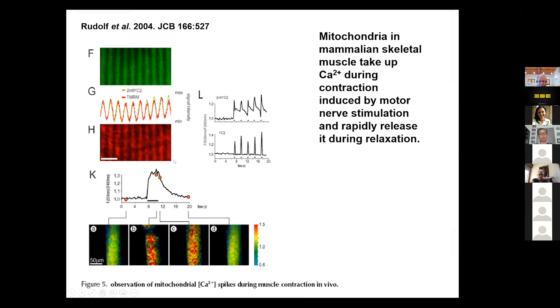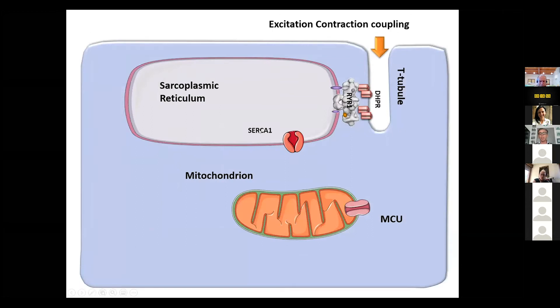This paper of Rudolph showed that mitochondria during skeletal muscle contraction take up calcium very fast between one stimulation and the other. This was very interesting to us because nobody was expecting this kind of result. This was a paper published in Journal of Cell Biology. So we started to think about this issue.